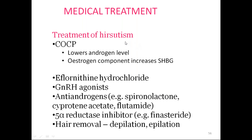For hyperandrogenism features like hirsutism, COCs are used to reduce androgen levels. Eflornithine hydrochloride is used for hair removal. GnRH agonists and antiandrogens like spironolactone at 50 to 100 mg twice daily can be used. COCs with cyproterone acetate and estrogen can also be added. Finasteride 5 mg daily — a 5-alpha-reductase inhibitor — prevents conversion of testosterone to dihydrotestosterone, reducing hirsutism. Physical methods like depilation, epilation, shaving, and waxing can also be done.